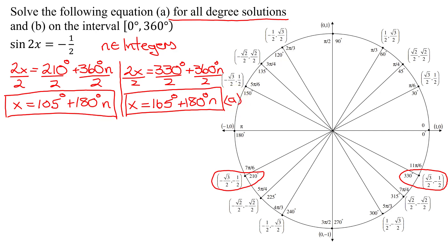So now we need to go on and find part B, which is solutions in the interval 0 to 360. So what I have to do is take both of these equations, and I'm going to plug in n equals 0 to start with. And when I plug in n equals 0 in there, I'm going to get x equals 105 degrees plus 180 times 0. So that's just 105 degrees.